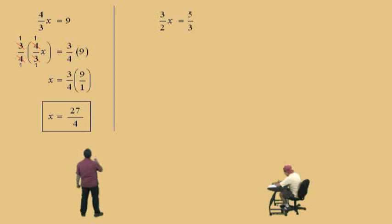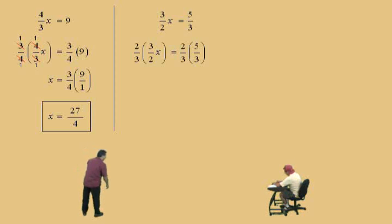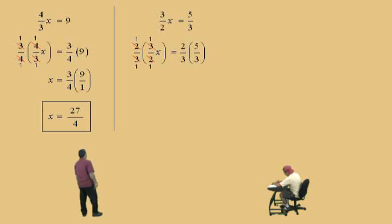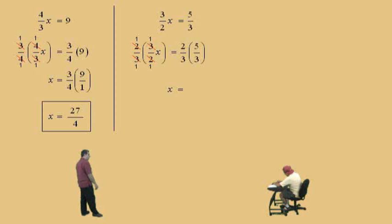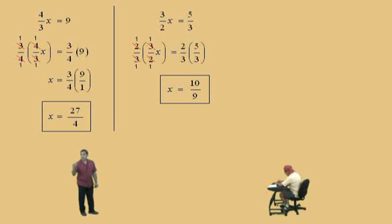Here we go, Charlie. 3 halves x equals 5 thirds. What do we do to both sides? We're going to use the reciprocal approach — multiply by 2 thirds. That's right, multiply both sides by 2 thirds, and you see the 2s cancel out, the 3s cancel out, leaving you with 1x, and the right-hand side is what, Charlie? 10 over 9. Very nice. We're going to try the same problem again using our clearing fractions, or kung-fu fraction technique.